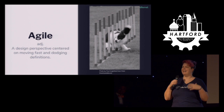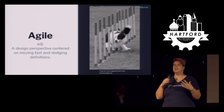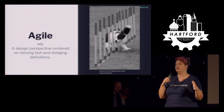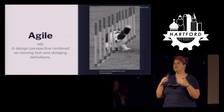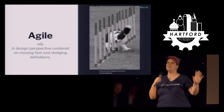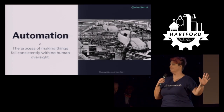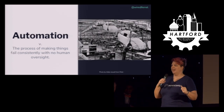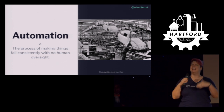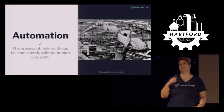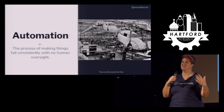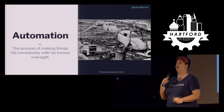Agile is a design perspective centered on moving fast and dodging any kind of definition or deadline. Just in case anybody tries to nail you down on when something will be done, say you can't do that, we're doing agile. Automation is the process of making things fail consistently and predictably with no human oversight, because we don't want to have to fail things all the time ourselves.